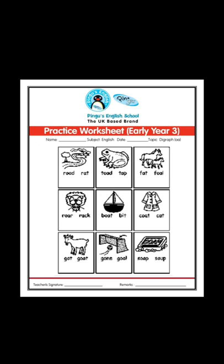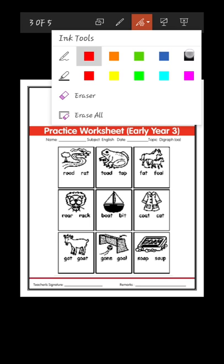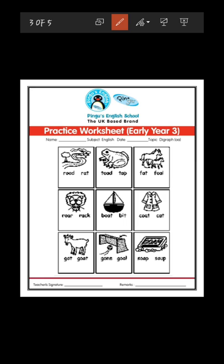You have to circle that word and then color the picture. Look at the first picture — what is this? This is a road. What is the correct spelling of road? R-O-A-D, road, or R-A-T, rat? Obviously R-O-A-D, road. So you have to circle road over here.